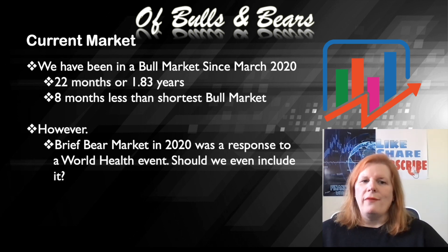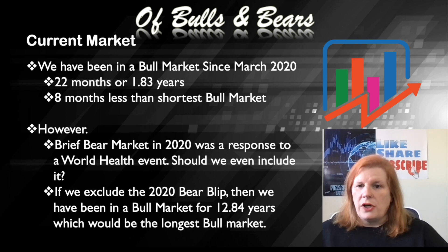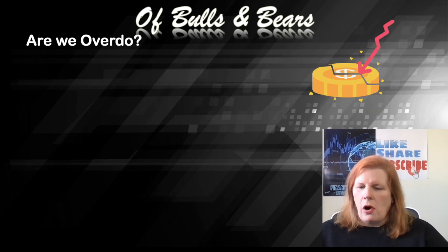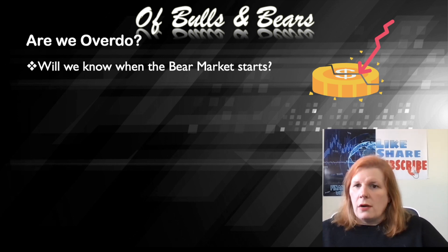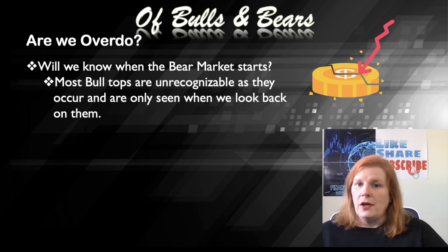Here's the issue with that — our 'however.' The brief bear market in 2020 was a response to a world health event. Should we even include it? If we were to exclude the 2020 bear blip, then we would have been in a bull market for 12.84 years, which would be the longest bull market on record. However, there were corrections in that brief bear market in 2020, so pressures were removed from companies — it did still function as a bear market. So let's ask the question: are we overdue? Is the bear market coming tomorrow, today? Are we already in it and don't even know it? Most bull tops are unrecognizable as they occur and are only seen when we look back on them from the future. It's easy to see a bull market top when you're looking backwards on charts, but when it's happening, you have no idea.